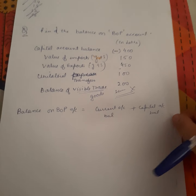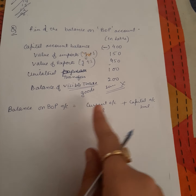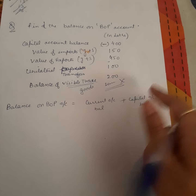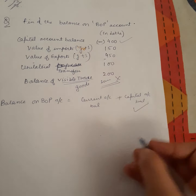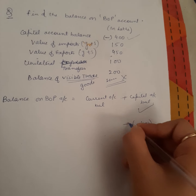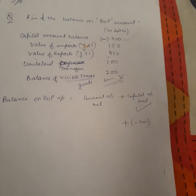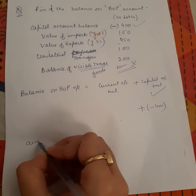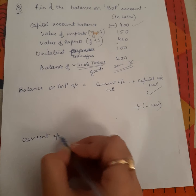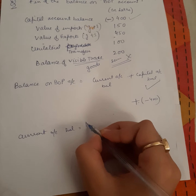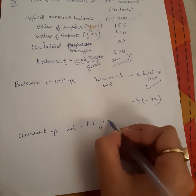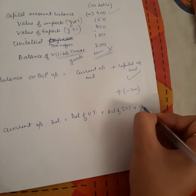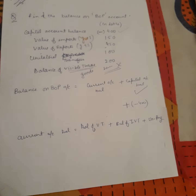Balance of BOP is calculated as current account balance plus capital account balance. We already have capital account balance given as minus 400. Current account balance is equal to balance of visible trade plus balance of invisible trade plus unilateral payments.